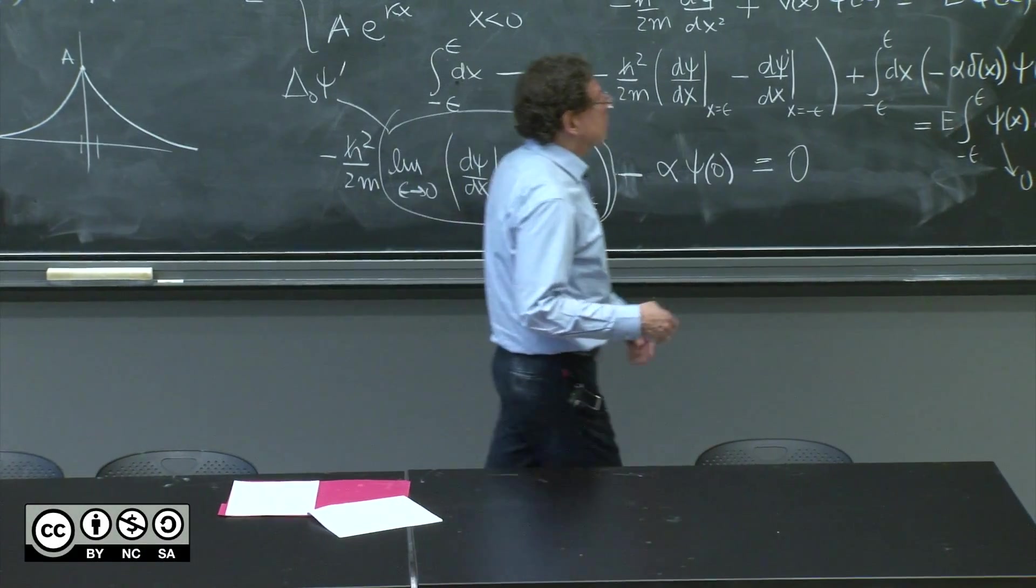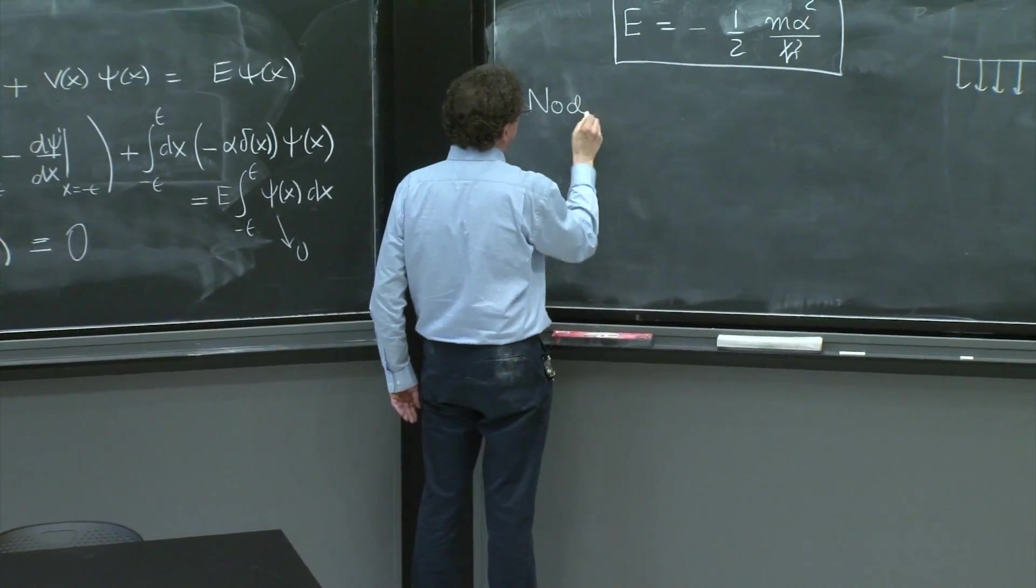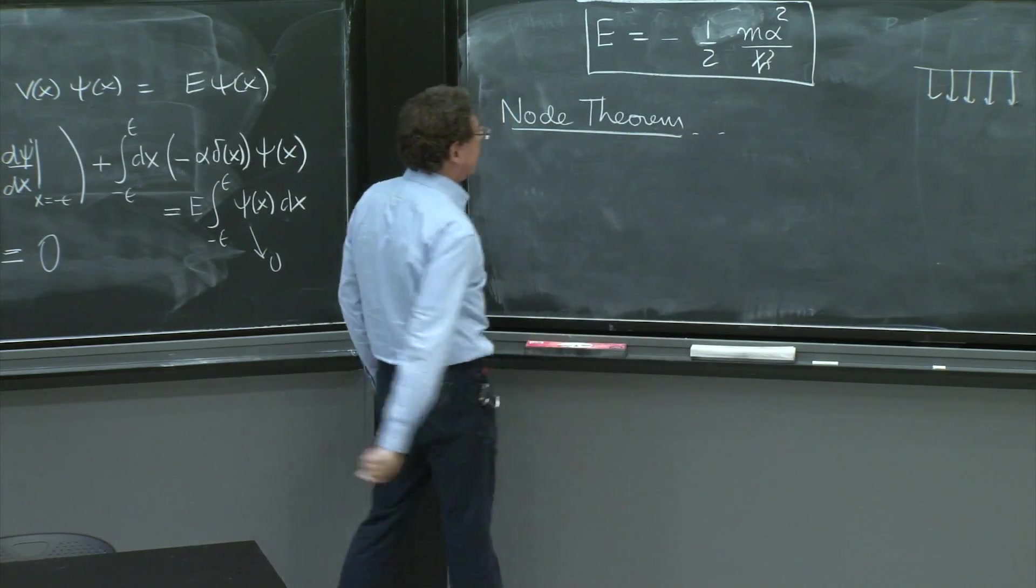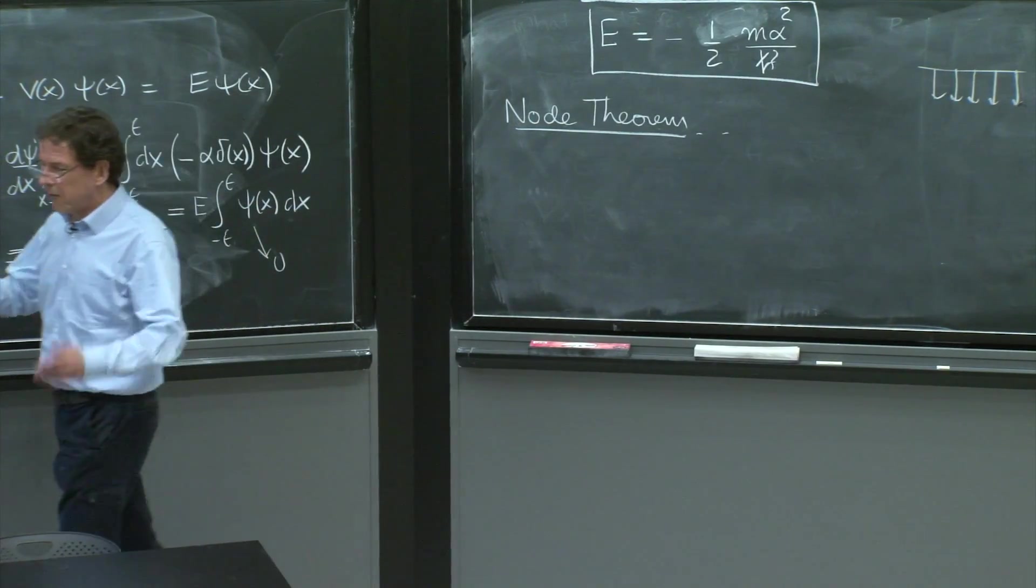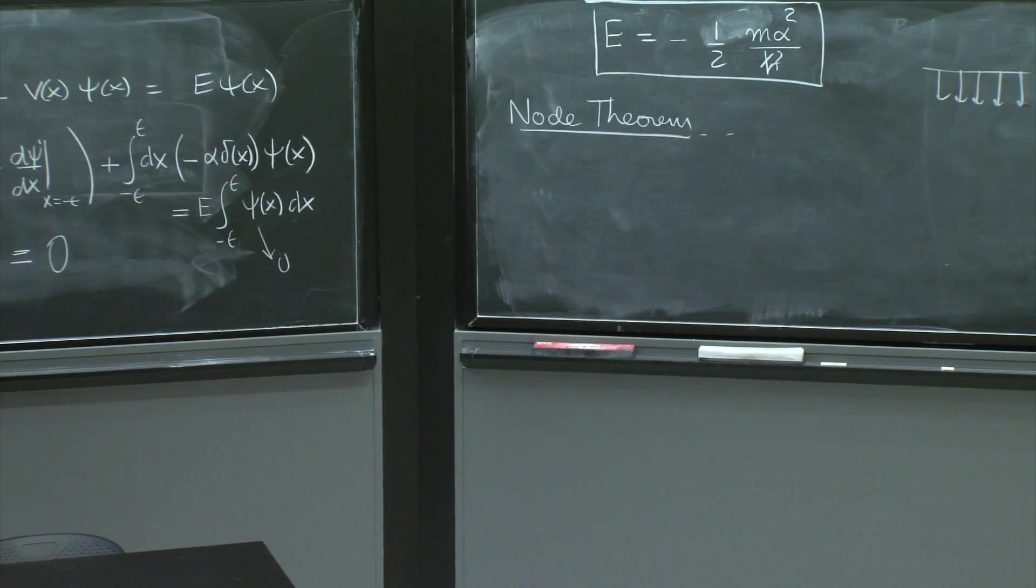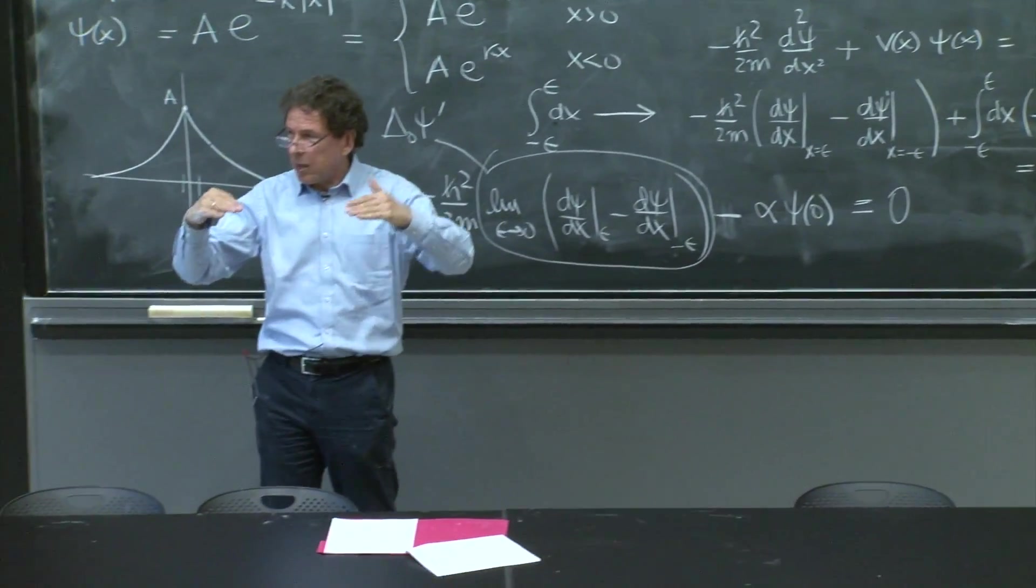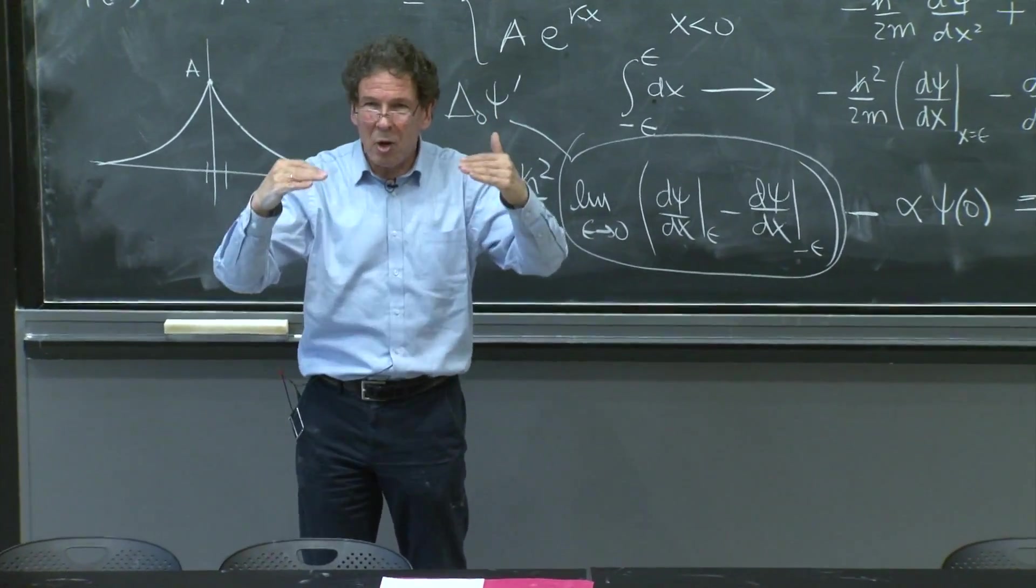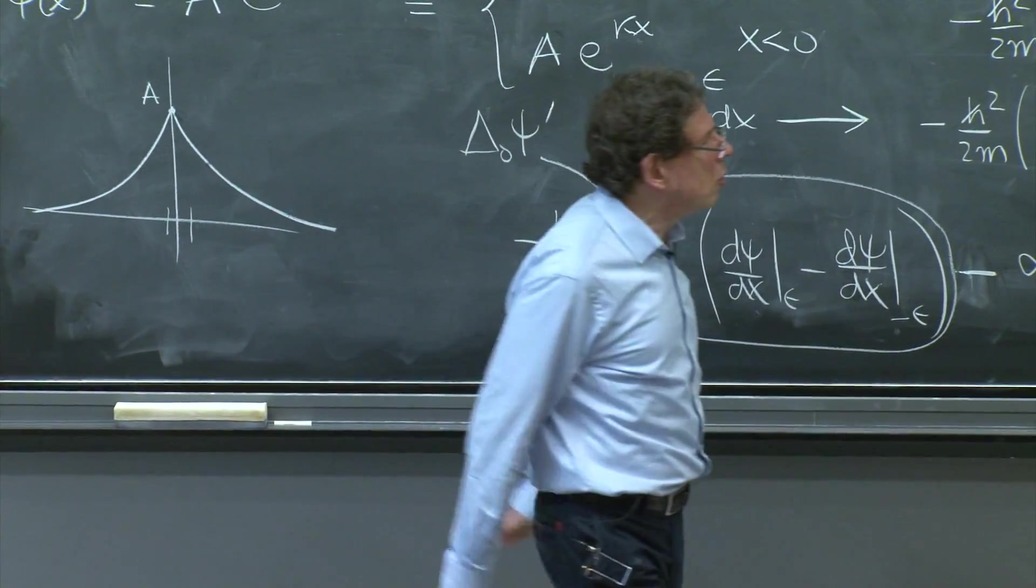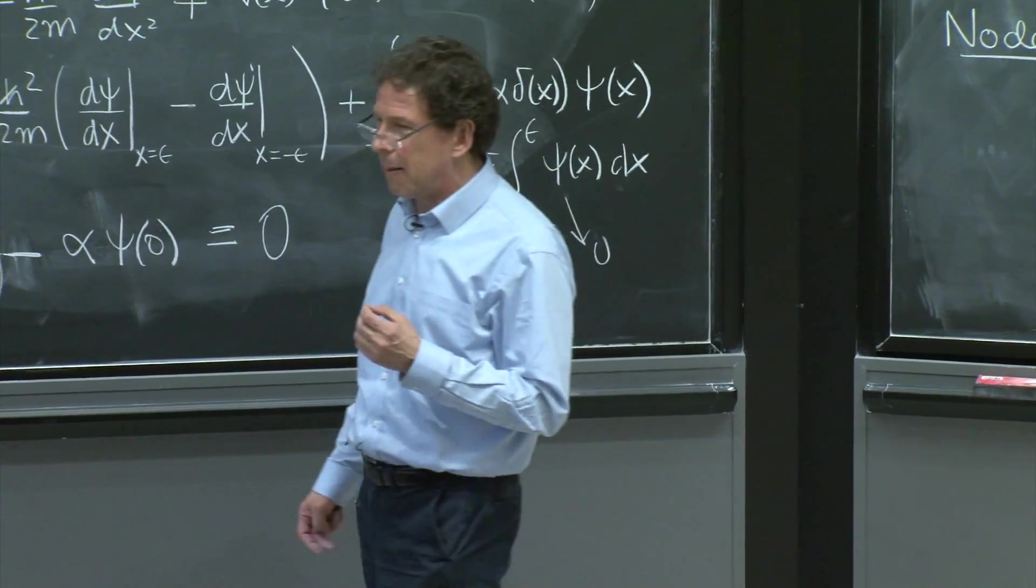The next thing I want to talk about for a few minutes is about the node theorem. We've heard before if you have a one-dimensional potential and you have bound states, the ground state has no nodes, the first excited state has one node, second has two, three, four. All I want to do is give you a little intuition as to why this happens.